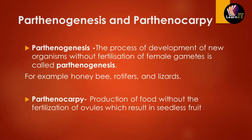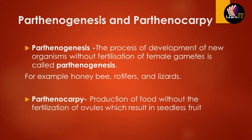There are two special terms related to fertilization. The first is parthenogenesis — the process of development of a new organism without the fertilization of the female gamete. Examples in animals include honey bees, rotifers, and lizards. It is included under sexual reproduction because it involves female gametes. The second is parthenocarpy, which occurs in plants — fruit is produced without fertilization of ovules, resulting in seedless fruit.